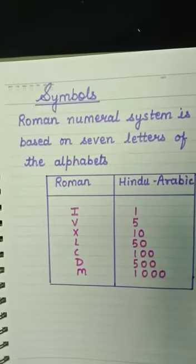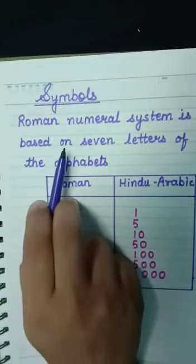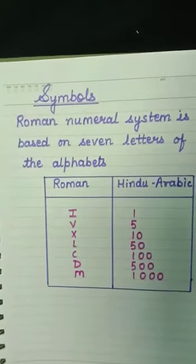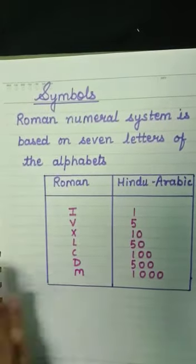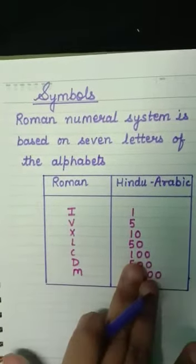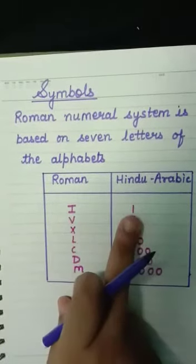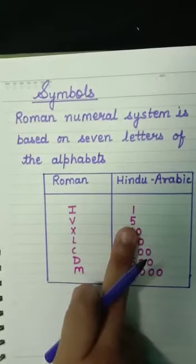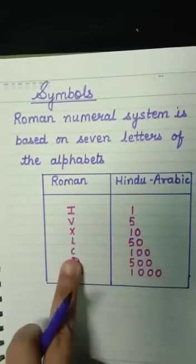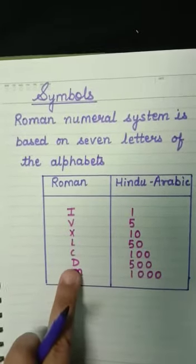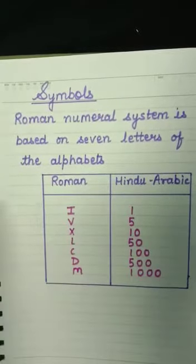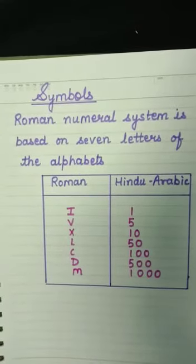अब पढ़ते हैं Roman symbols के बारे में। Roman numeral system is based on seven letters of the alphabet। उनमें से seven letters को choose किया गया है Roman numeral system बनाने के लिए। यहाँ एक table है: Roman numeral और उनके Hindu-Arabic equivalents — I=1, V=5, X=10, L=50, C=100, D=500, M=1000। इन 7 symbols के according इनके representatives को learn कर लें, तो हम कोई भी Roman numeral बना सकते हैं।